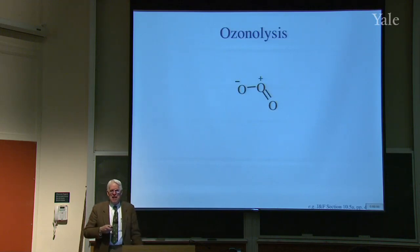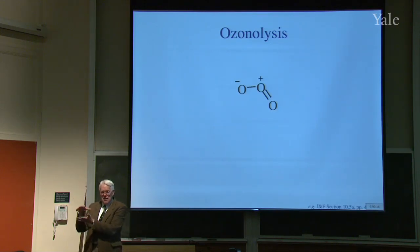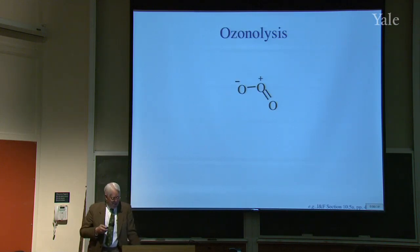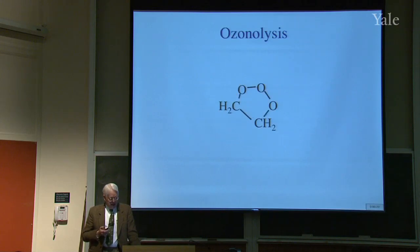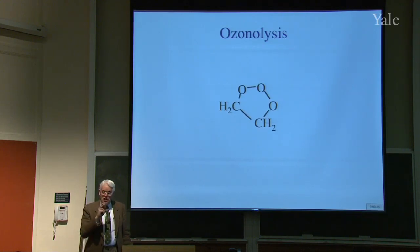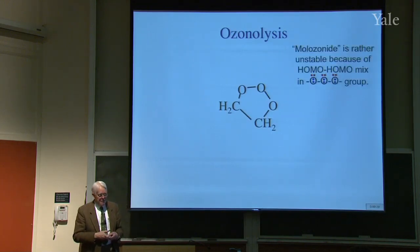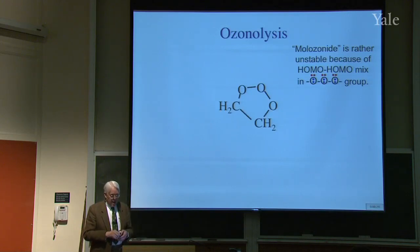In ozonolysis, alkene comes in and forms two new bonds making a five-membered ring — this is the molozonide. But it's unstable because three oxygens in a row means lone pairs mixing with each other, just like with peroxides, only worse. So it breaks apart — not the way it formed, but by breaking different bonds via a retroprocess, giving an aldehyde plus a carbonyl oxide 1,3-dipole.